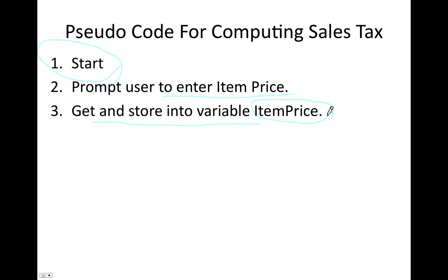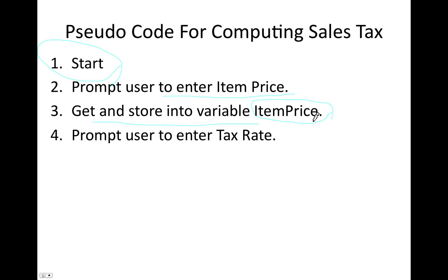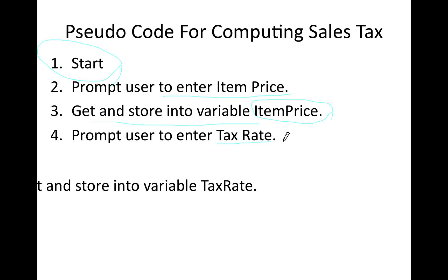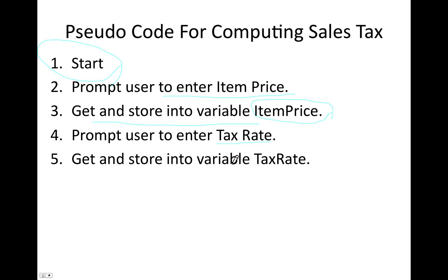In pseudocode, when we define a variable name, we don't leave any spaces — we use one continuous word. Next, we prompt the user to enter the tax rate. The user will enter it as a fraction, so if the tax rate is 10% they enter 0.1. That can be changed to accept a percentage, but that would require one more formula, so we won't do that here. Then we get and store whatever tax rate they enter into a variable called 'taxRate'.